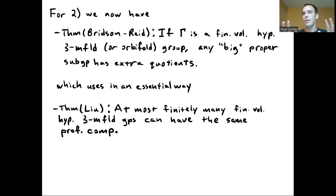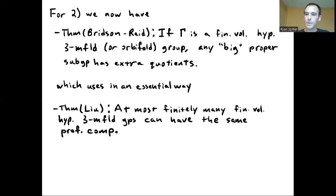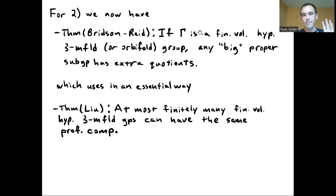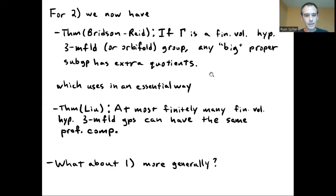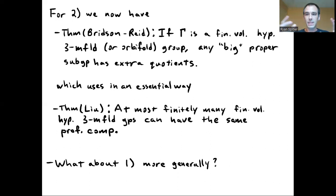Liu was able to show that if you're looking just at finite volume hyperbolic 3-manifold groups, you can only have at most finitely many which have the same profinite completion. This was enough to give the results for Bridson and Reid. So if you want to run the argument from step two, you can get this to work for any finite volume hyperbolic 3-manifold group without the detailed ad hoc arguments that were necessary at first.